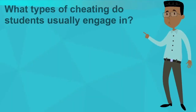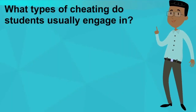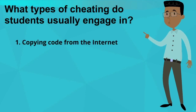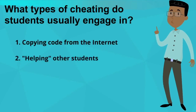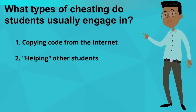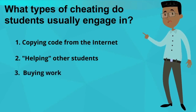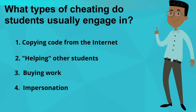If students cheat in this course, they usually do one or more of these things: they copy code from the internet, help other students when it's not appropriate, or they purchase work and submit it as their own. Another way students can cheat in an online environment is when they have someone else take a test for them.